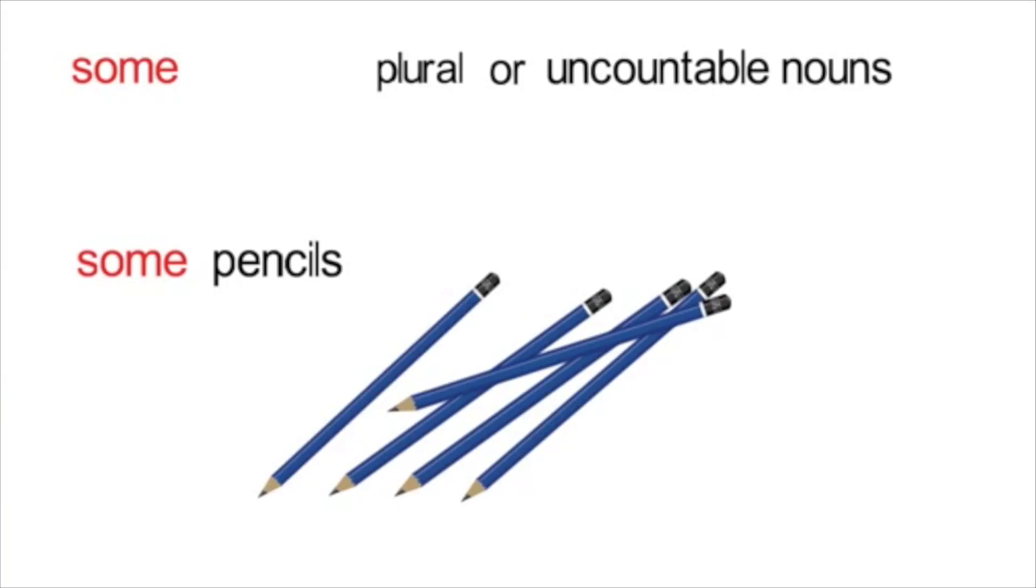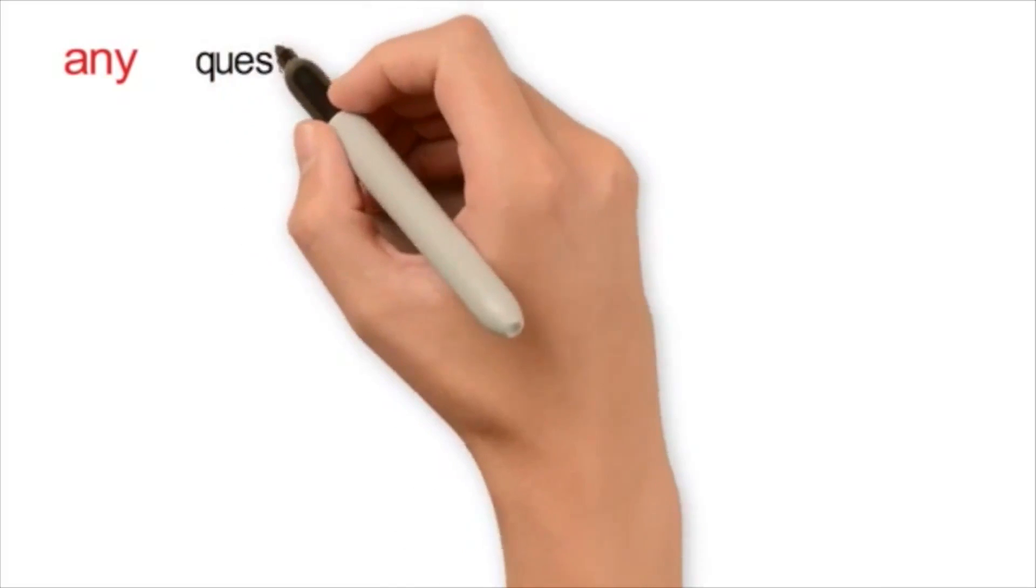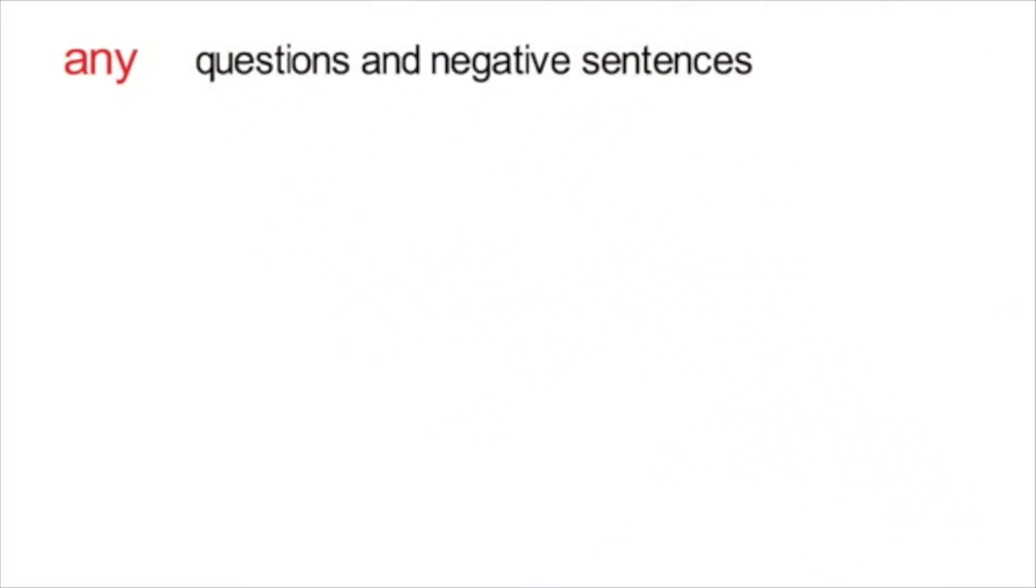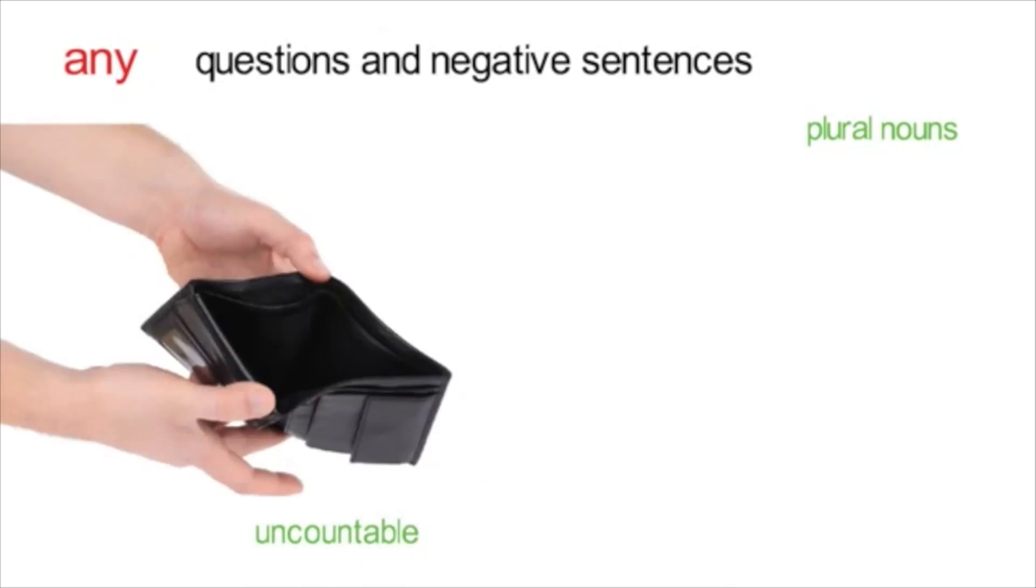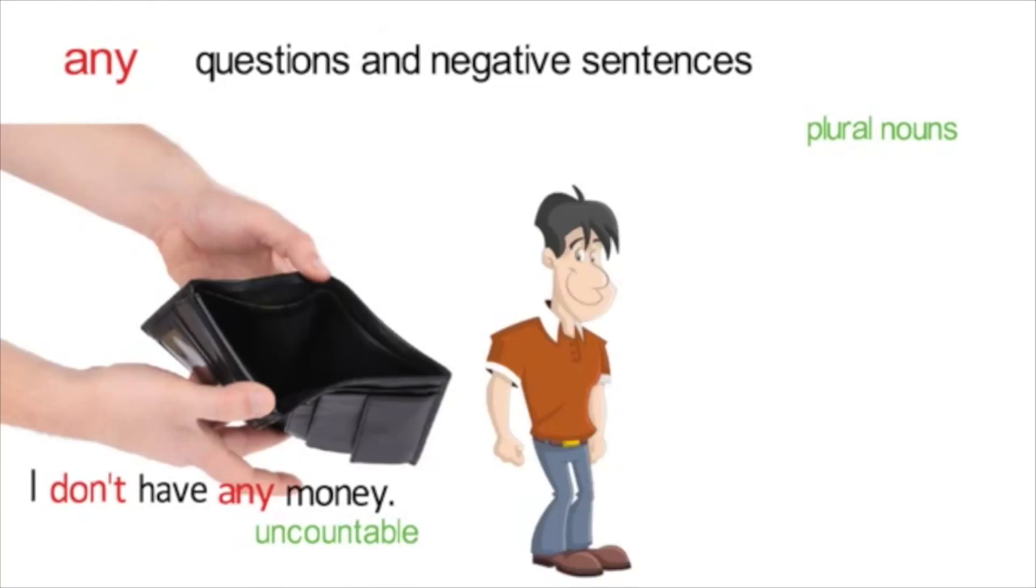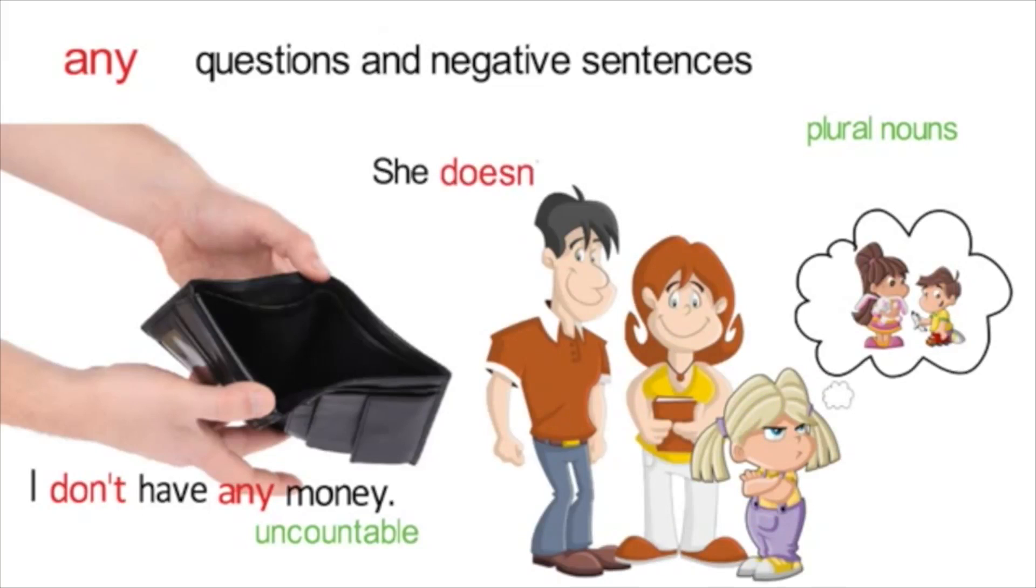You can use any with questions or negative sentences when using plural or uncountable nouns. So, an example of a negative sentence might be, I don't have any money, or she doesn't have any brothers or sisters. Money is an uncountable noun, but brothers and sisters are plural countable nouns.